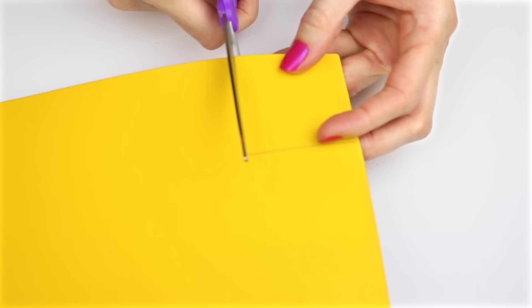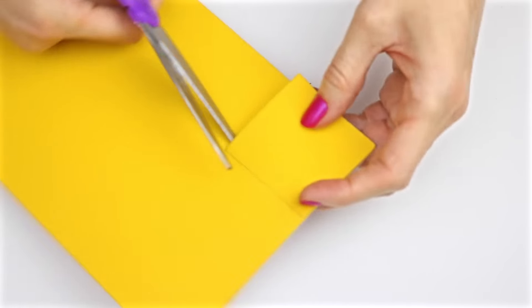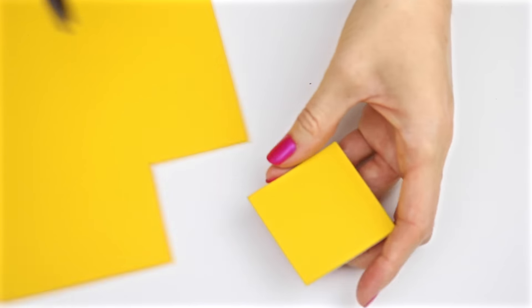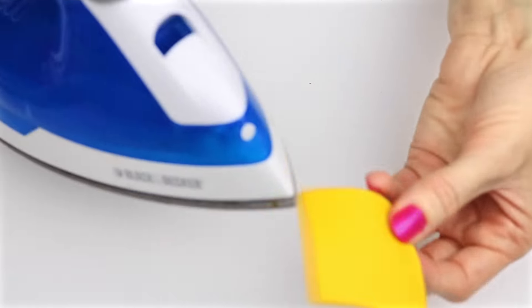For the cheese, choose a piece of foam that closely matches the cheese color. Cut a small square out. Heat that with an iron so the edges curl slightly.